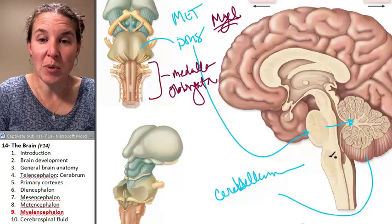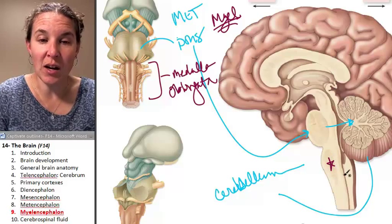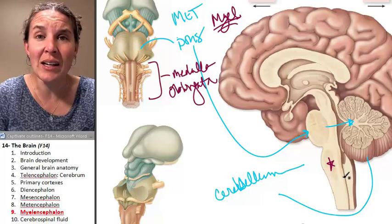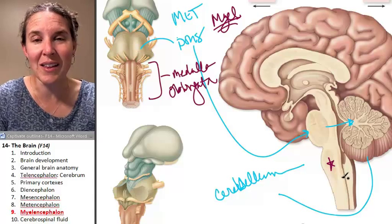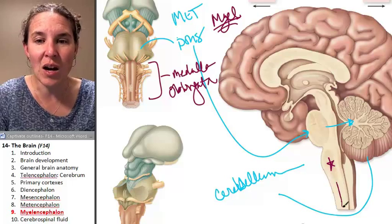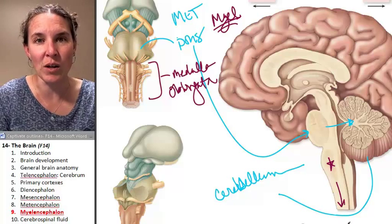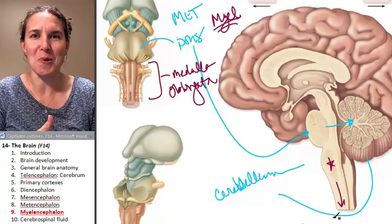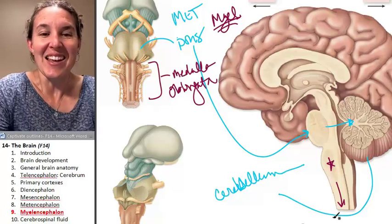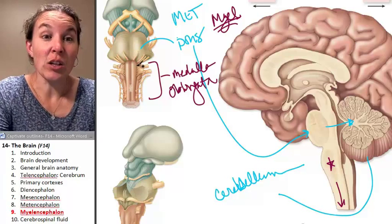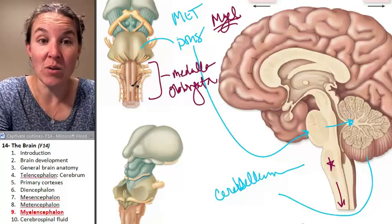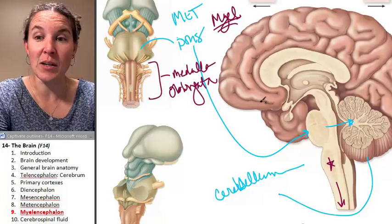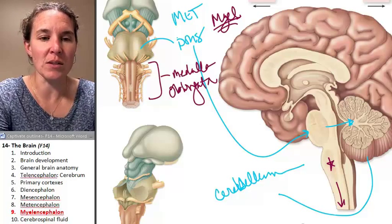It's found inferior to the pons — here's my medulla oblongata. It literally looks like a little swelling of your spinal cord, and that's what it is. The medulla oblongata connects to the spinal cord and continues on as spinal cord after that. Lots of cranial nerves come out of the medulla oblongata, and that is our next topic, so we will look at those next.